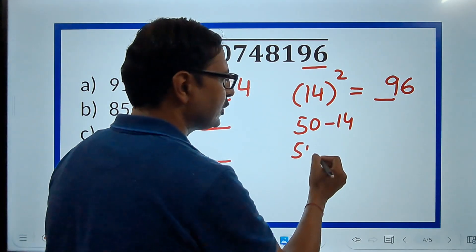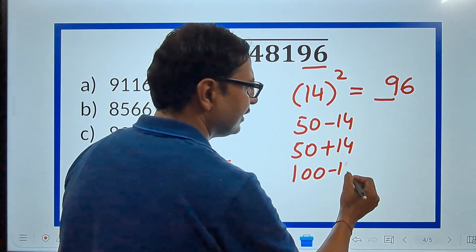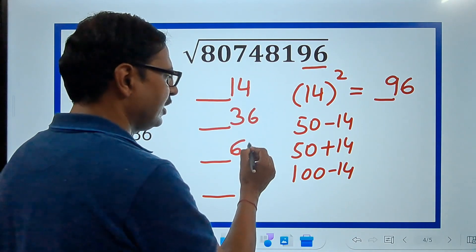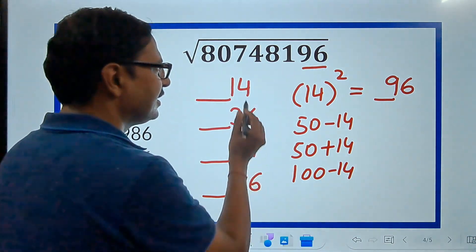50 minus 14. 50 plus 14. And 100 minus 14. So, what is this? This is 36. What is this? This is 64. And what is this? This is 86.